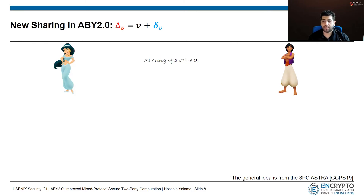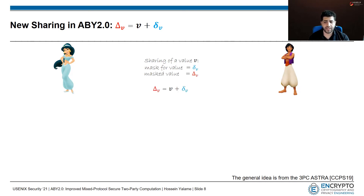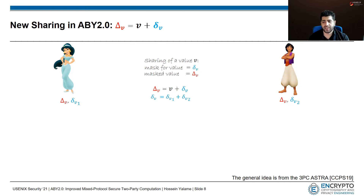We now describe our approach. The major modification is the sharing scheme, whose general idea is from 3PC-ASRA. For every value V, we associate a random mask, denoted in blue. Given the value V and its mask, we define the masked value as value plus mask (blue), denoted in red in the slide. The masked value is given in clear to both parties, along with one share of its mask. The missing share of the mask provides privacy of the values. For example, Yasmin doesn't have delta_V2 and Aladdin doesn't have delta_V1.